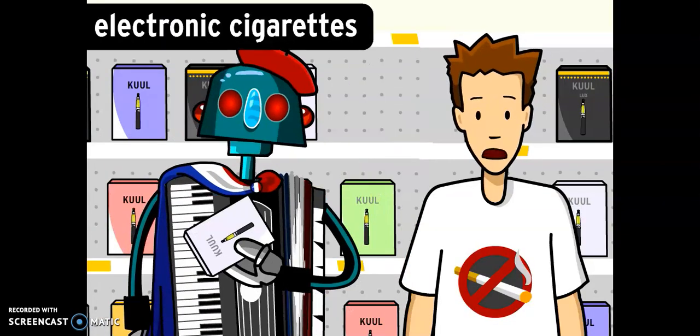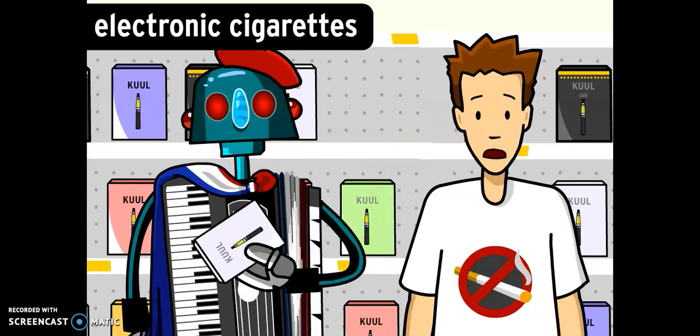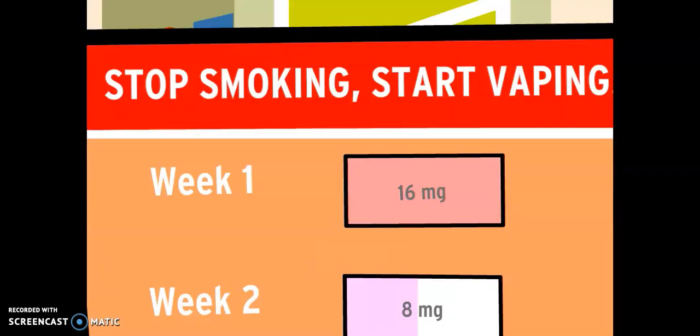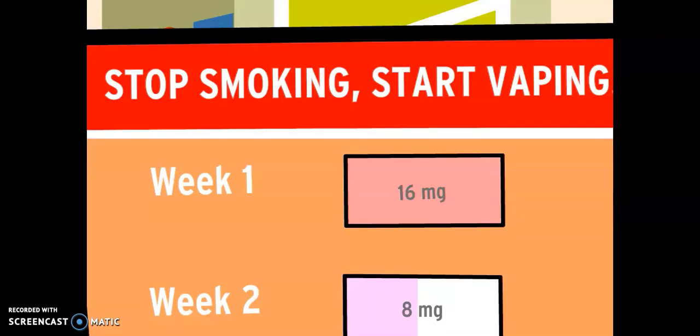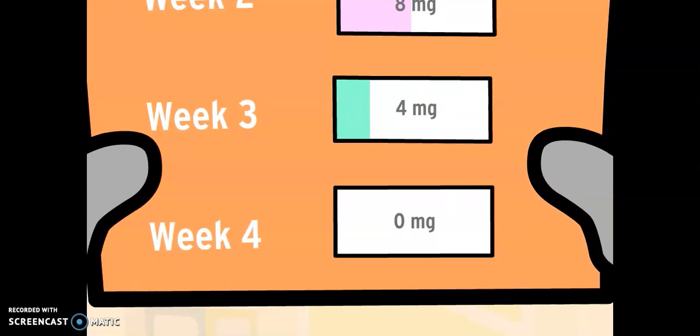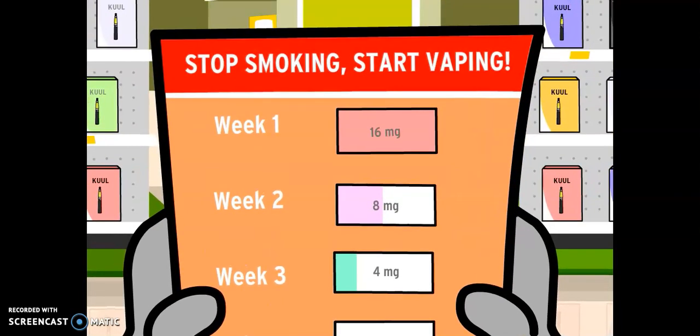Yeah, electronic cigarettes or e-cigarettes contain nicotine too. They were first sold as a way to quit smoking. The idea is that over time, you switch to ones with less and less nicotine. Eventually, you switch to a nicotine-free version, and voila, you're not addicted anymore.